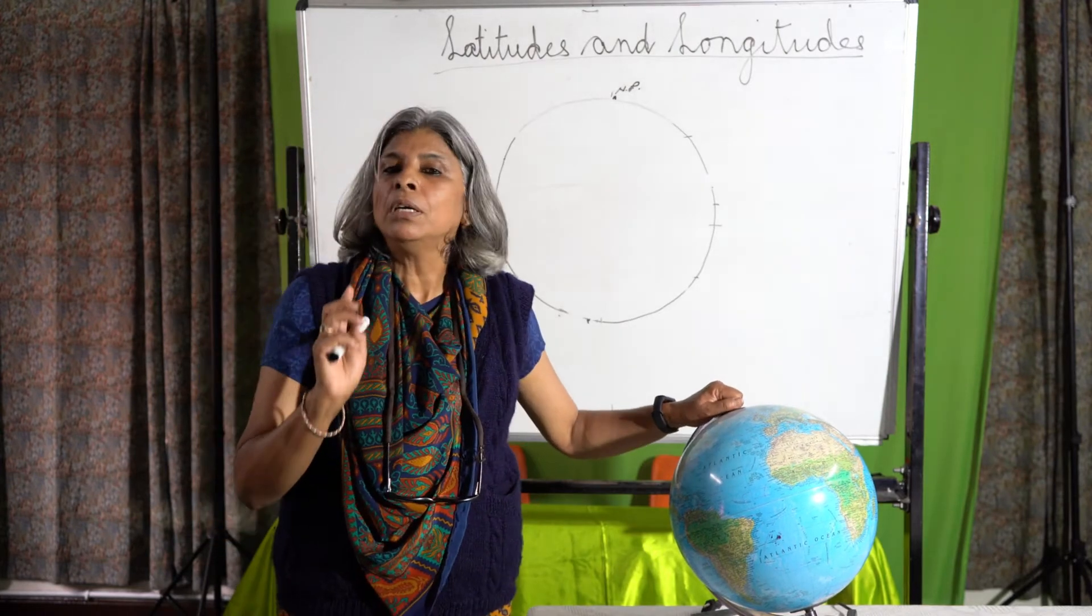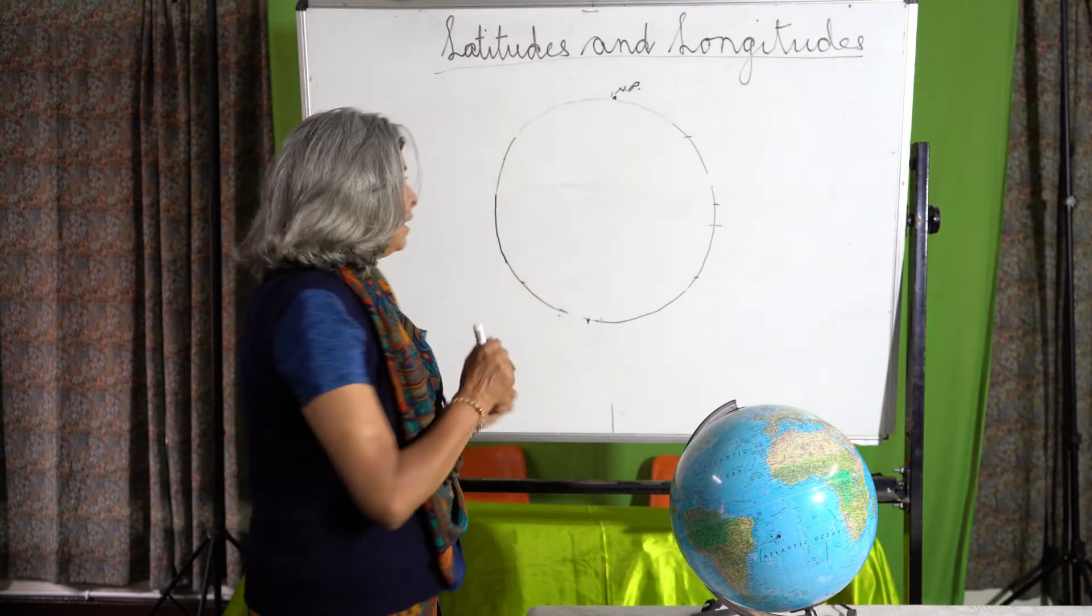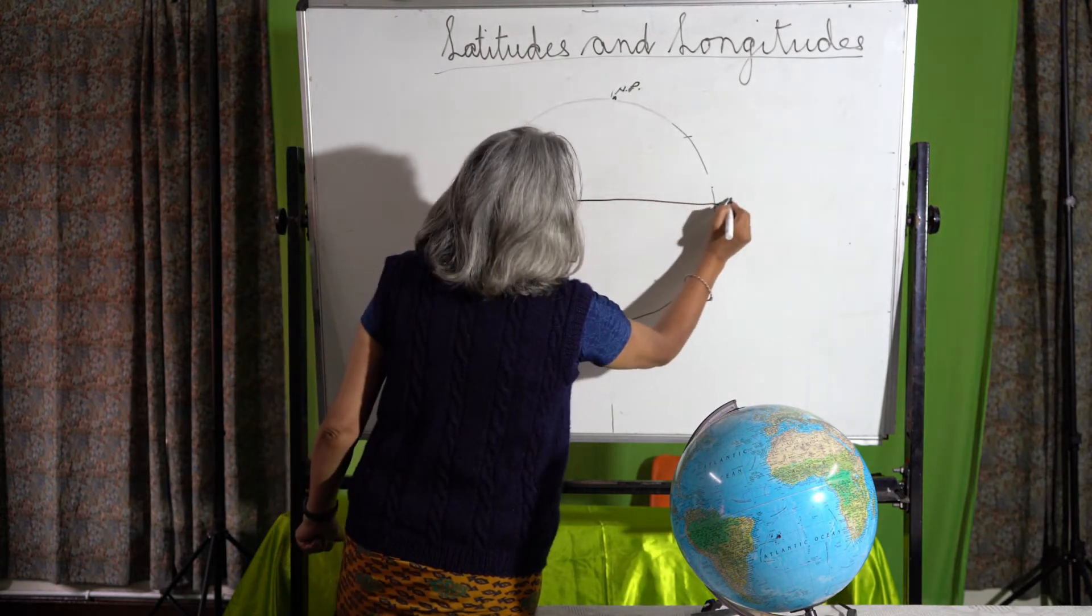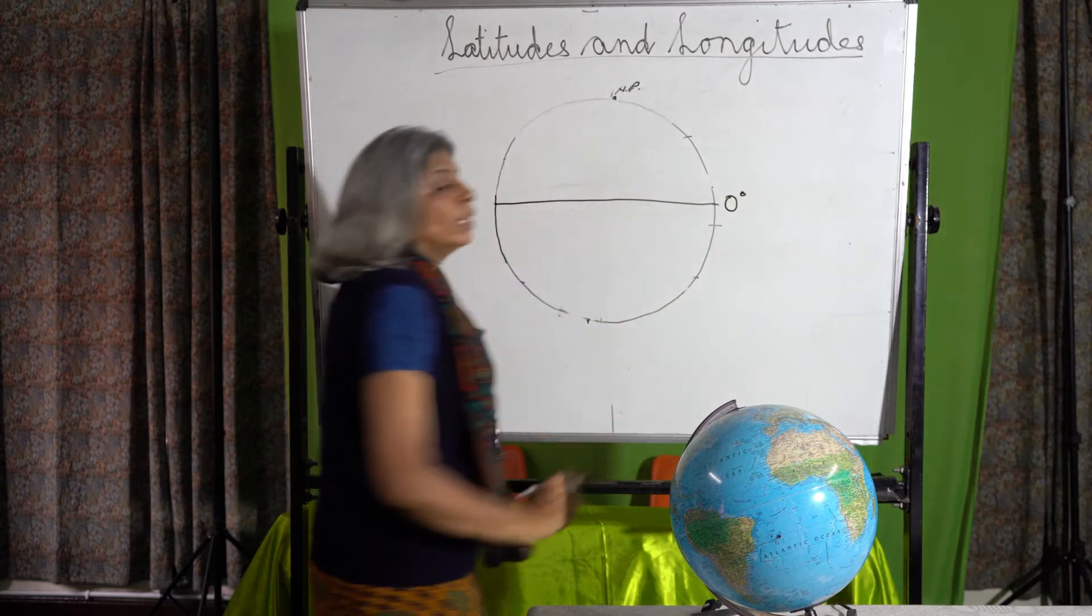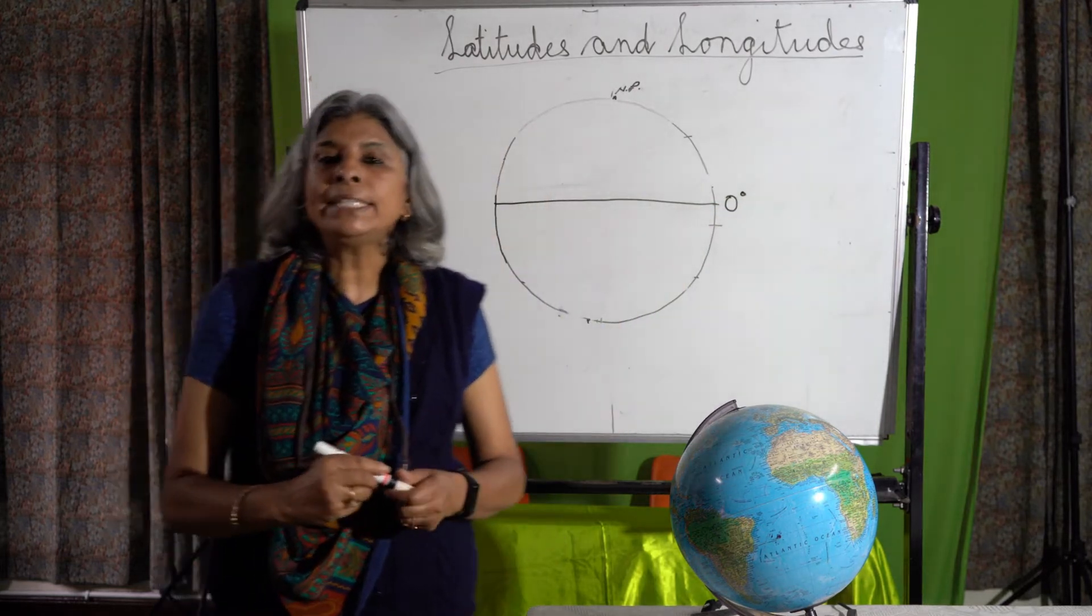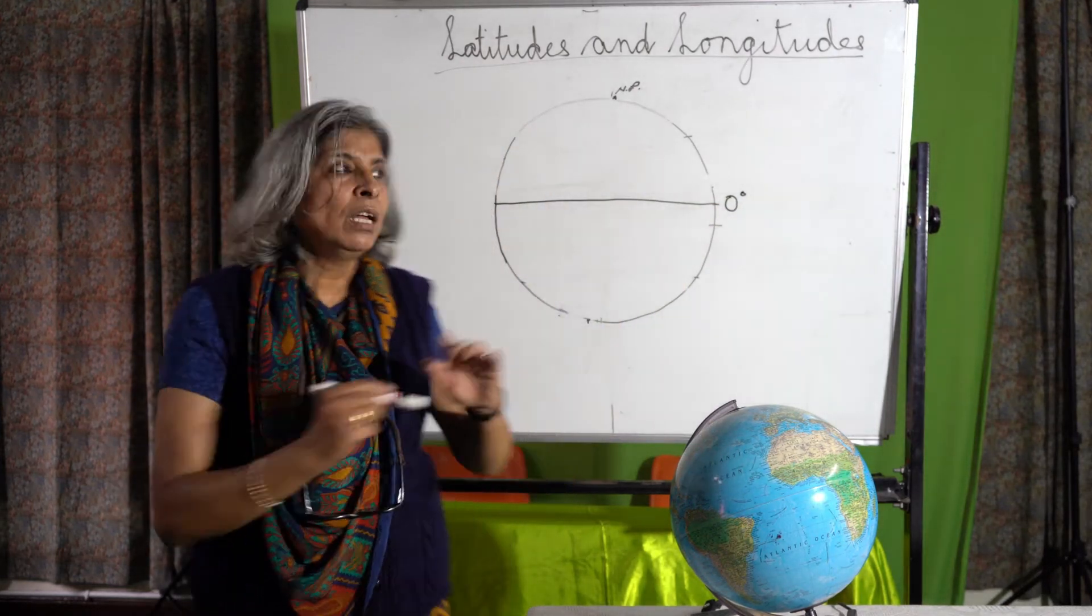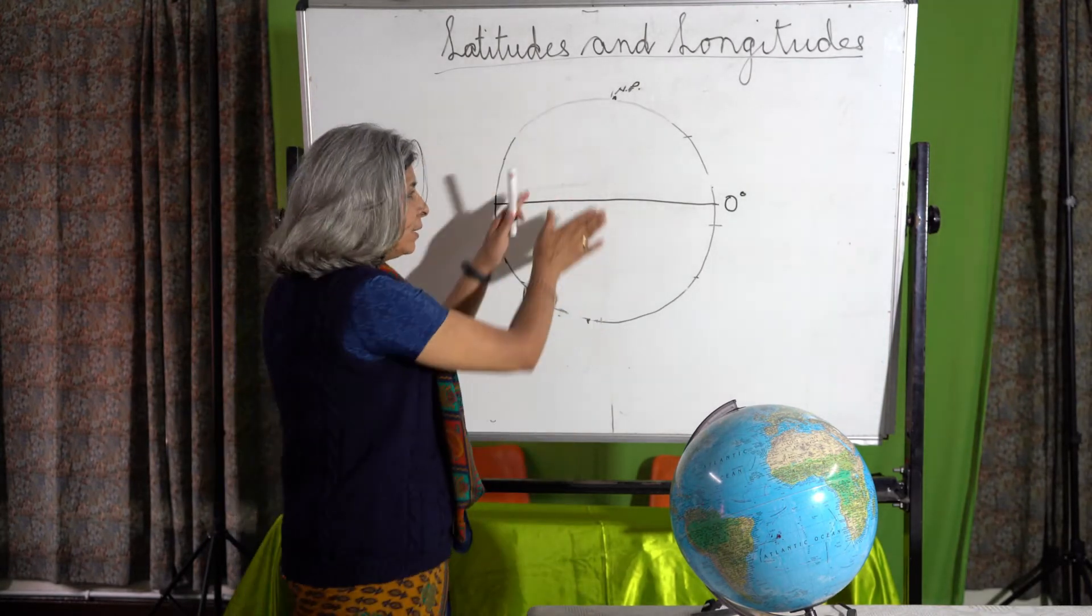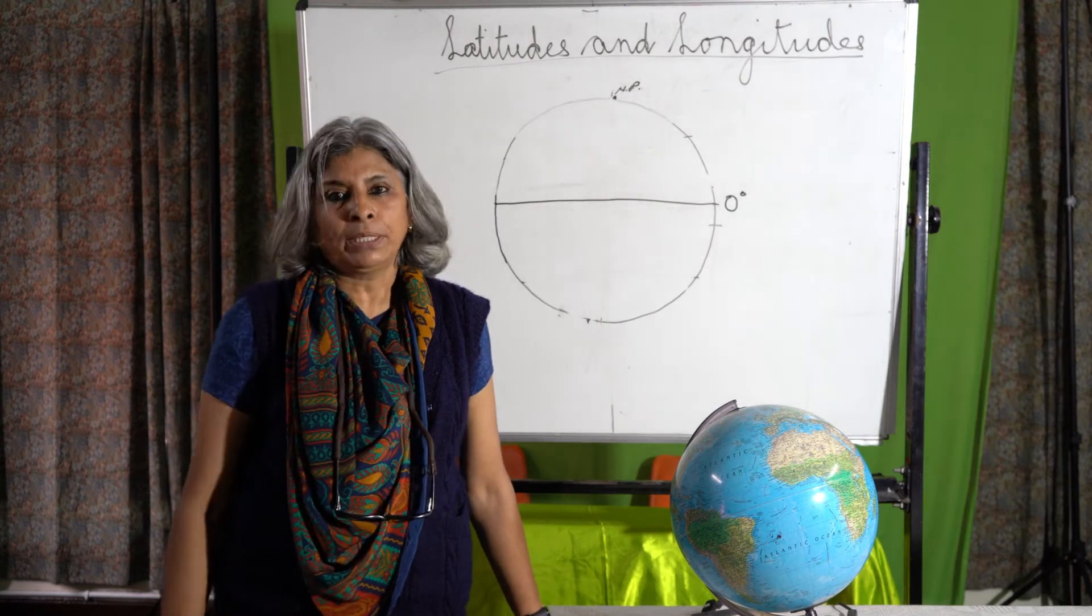The most important latitude is the zero degree line of latitude which is called the equator. It divides the earth into two equal halves, the northern hemisphere which is towards the north of the equator and the southern hemisphere which is to the south of the equator.